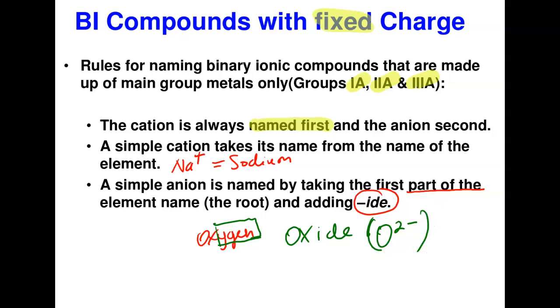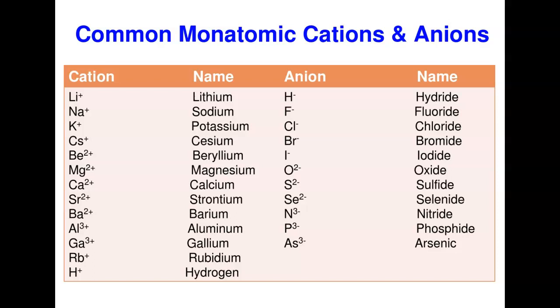Here are the common monatomic ions: lithium, sodium, potassium (group 1, 1+); beryllium, magnesium, calcium, strontium (group 2, 2+); aluminum and gallium (group 3, 3+); rubidium and hydrogen also in group 1. Hydrogen can form a cation in acids or an anion (hydride). For anions: fluorine is fluoride, chlorine is chloride, bromine is bromide, iodine is iodide, oxygen is oxide, and so forth.